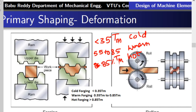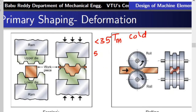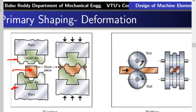In forging, we have a lump of metal which is pressed between two dies — an upper die and a lower die. Because of temperature, the metal has become soft. When force is applied, the metal takes the shape of the die and achieves the required shape.